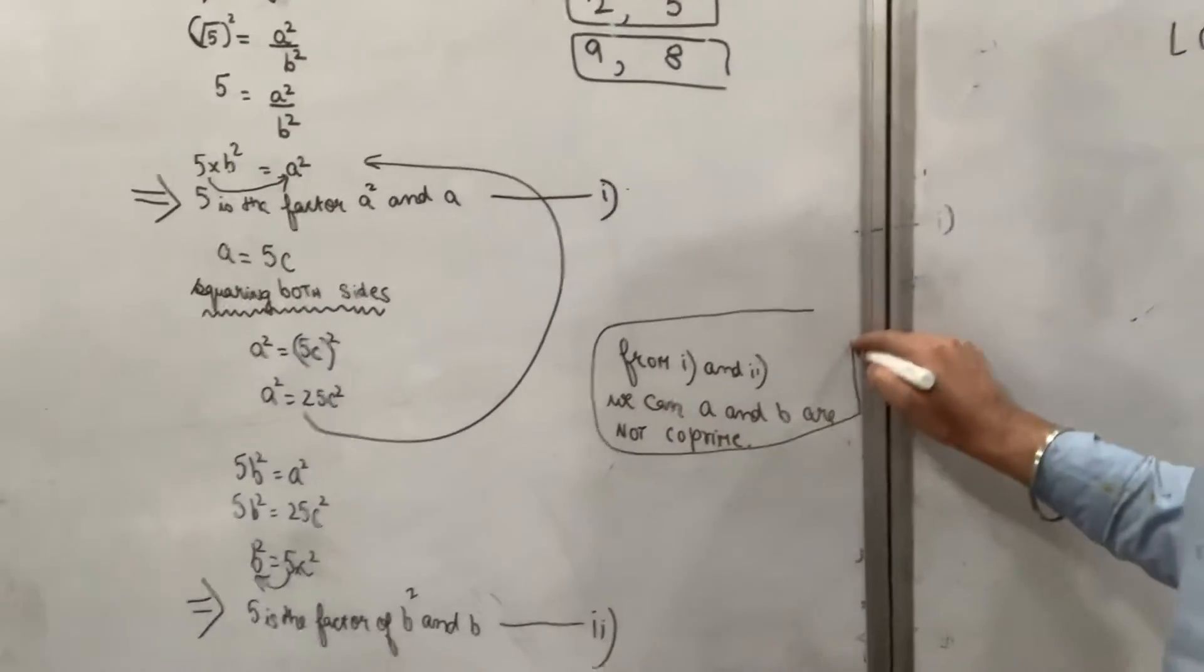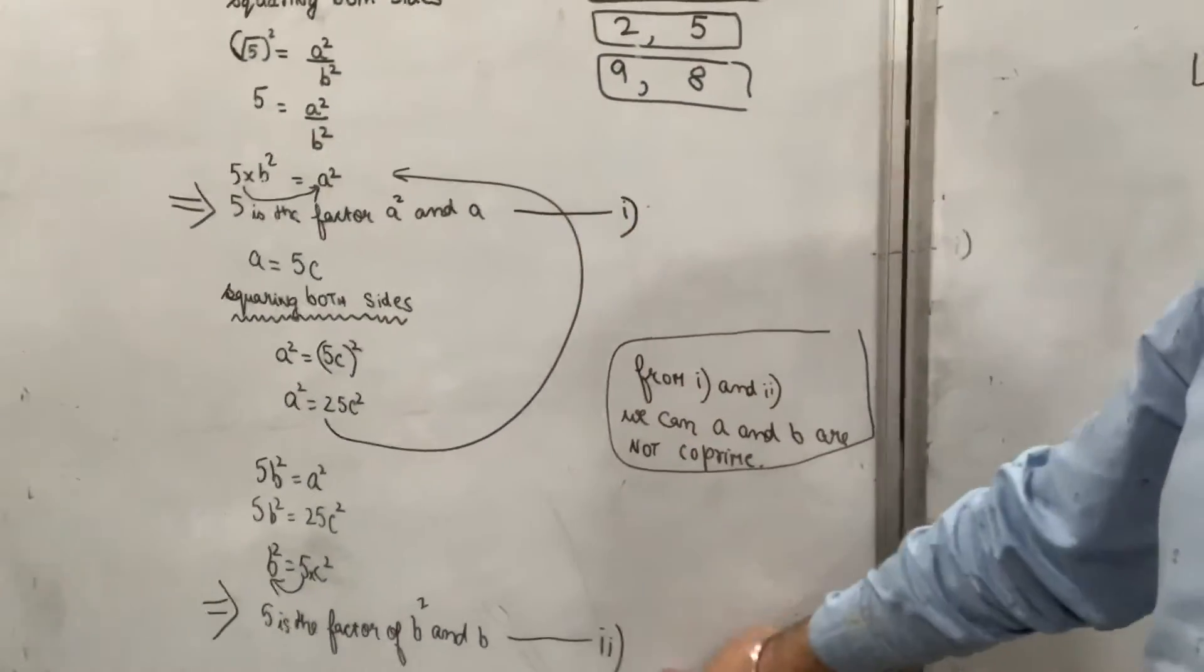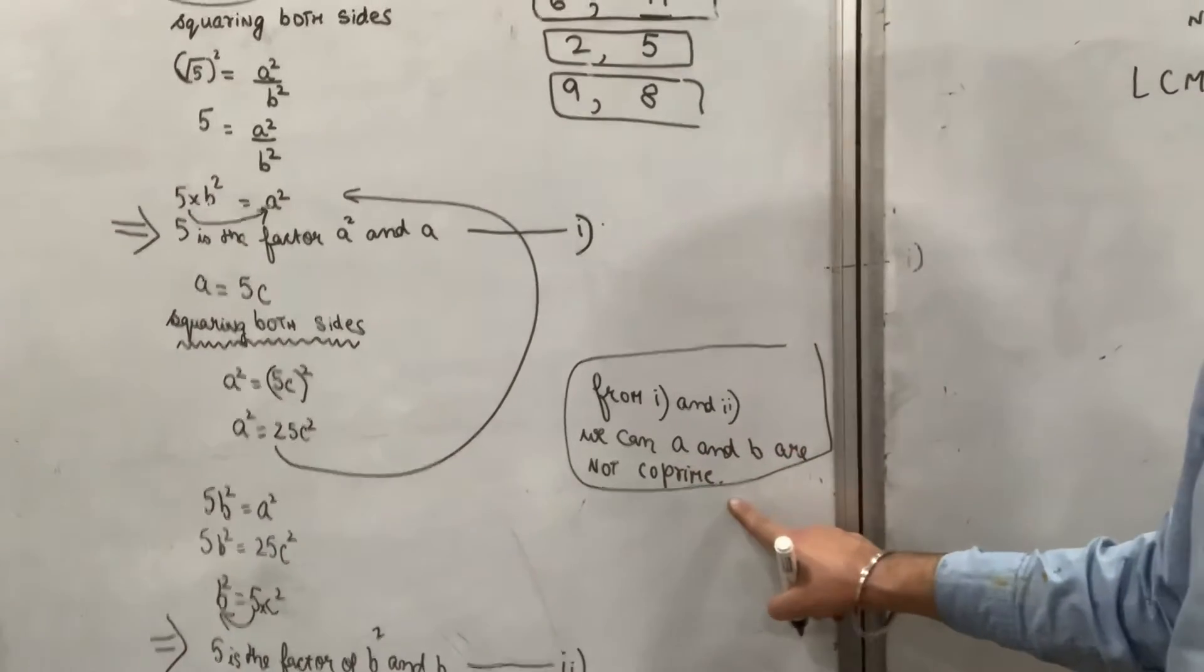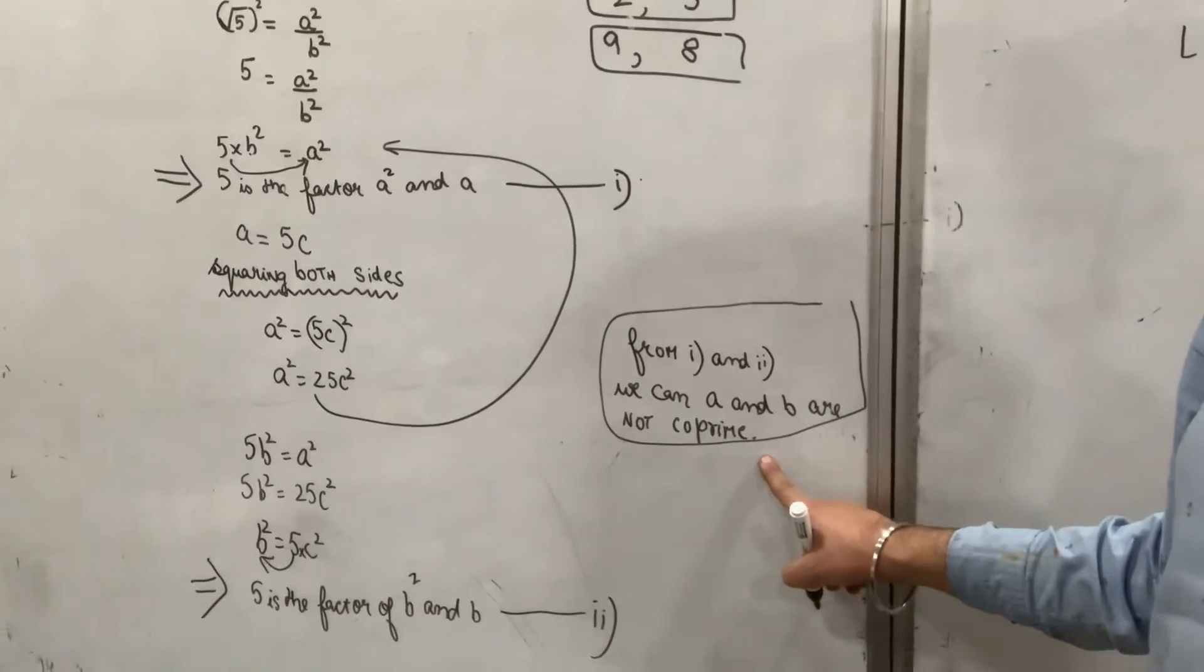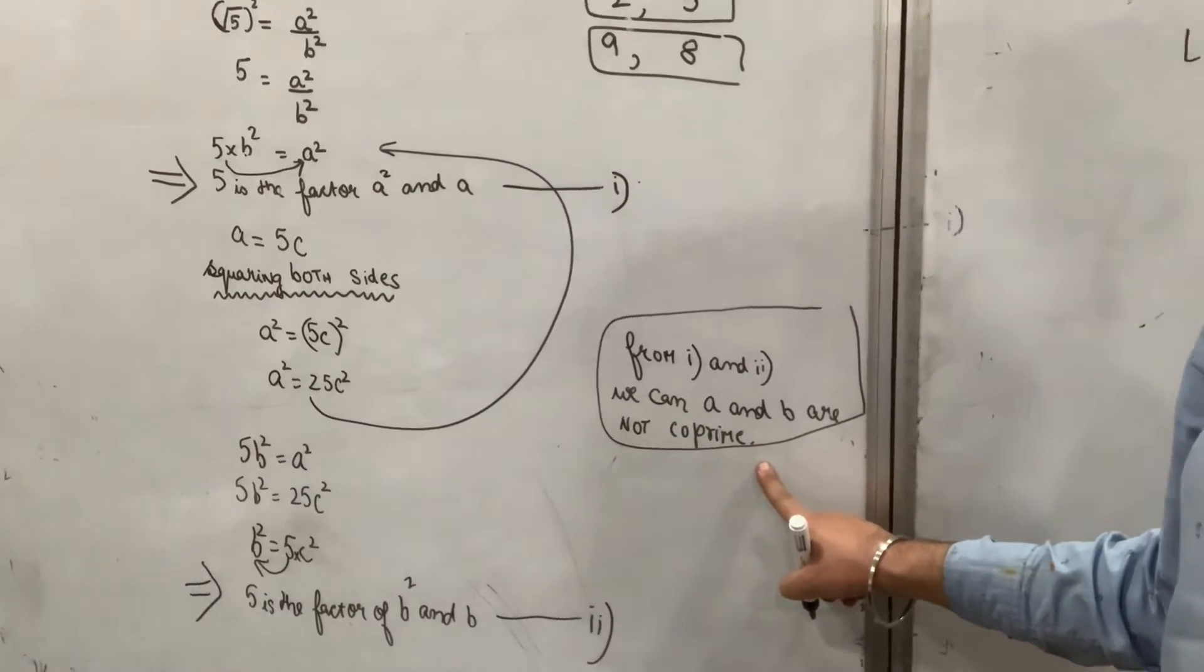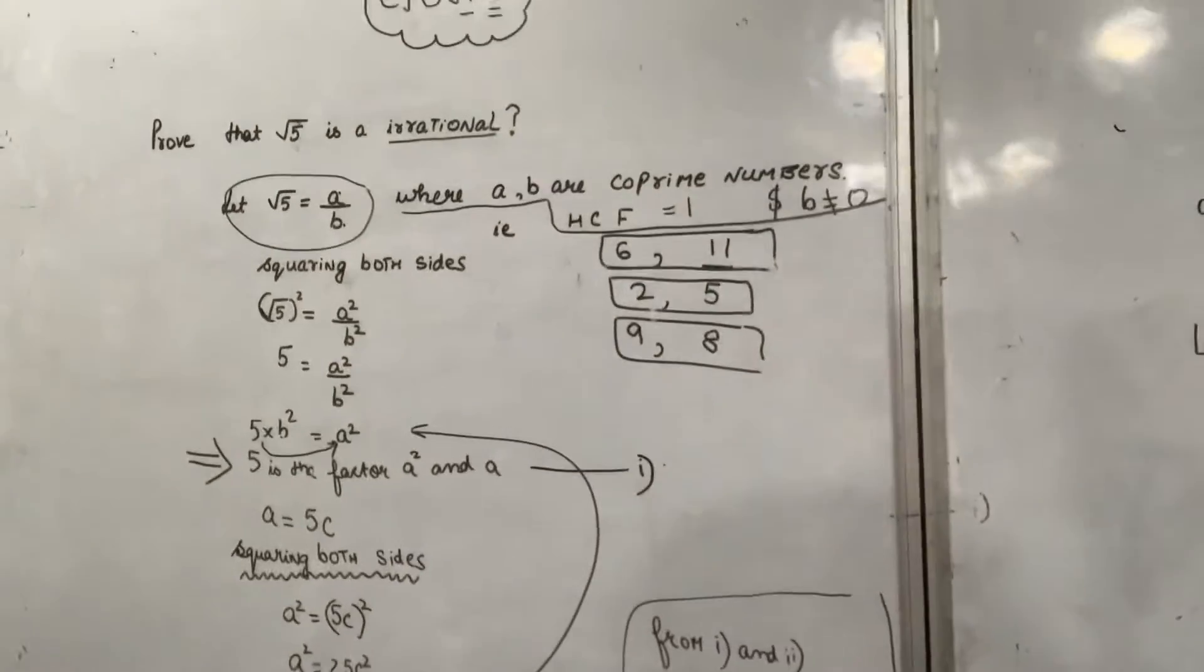From equation one and two, we can say a and b are not coprime. Hence our assumption is wrong, so we can say root 5 is irrational.